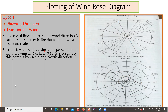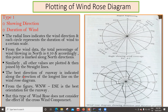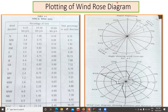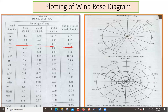Now, how do you plot this? First, mark the directions: north, south, west, east, northwest, southeast, southwest, and northeast. The distance between each direction is always 22.5 degrees. In the northeast direction, the total percentage is 1.93%, meaning 1.93% of the total time the wind blows in that 22.5-degree zone. In the southwest portion, the value is 1.33%. In this way, the wind data is located on the diagram.